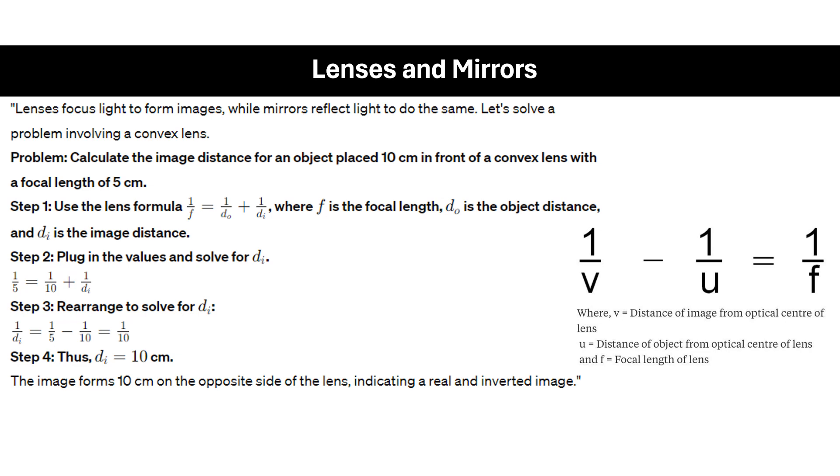Let's now go to lenses and mirrors. Lenses focus light to form images while mirrors reflect light to do the same. Let's solve a problem involving a convex lens. The problem reads: calculate the image distance for an object placed 10 centimeters in front of a convex lens with a focal length of 5 centimeters. Let's use the lens formula: 1 over f equals 1 over d sub o plus 1 over d sub i, where f is the focal length, d sub o is the object distance, and d sub i is the image distance.